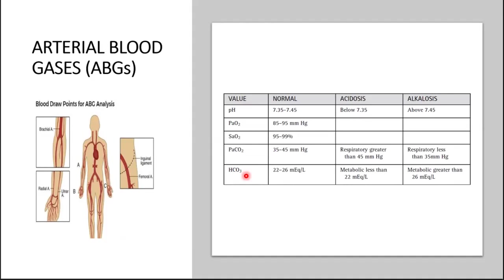If you keep accumulating more and more of this metabolic base, your level goes above 26 and you're going to get metabolic alkalosis. Conversely, if you keep losing your metabolic base, acid builds up — you have more acid in your system than metabolic base — and you will develop metabolic acidosis.